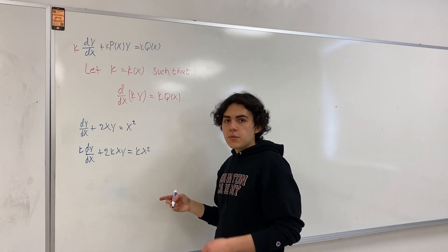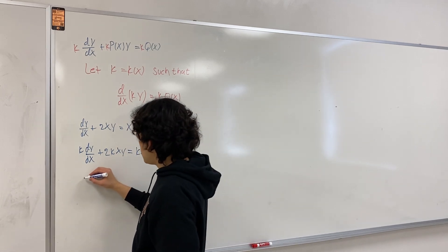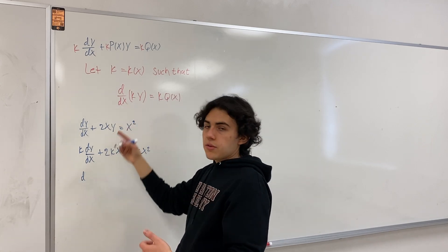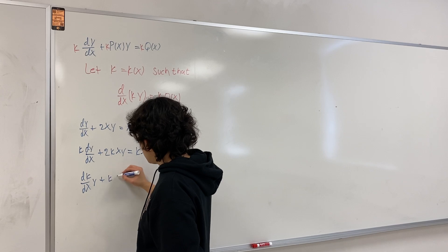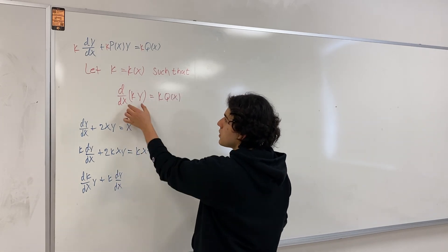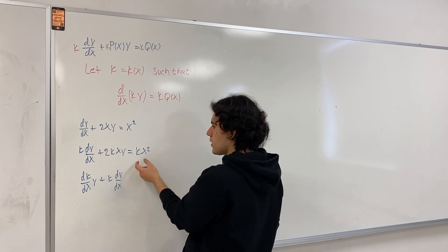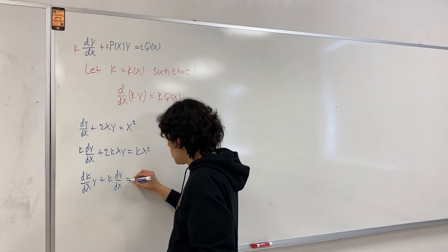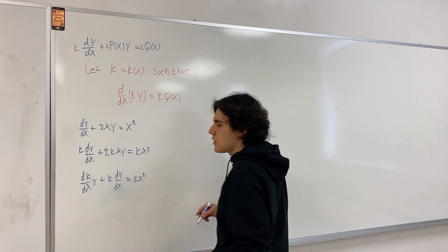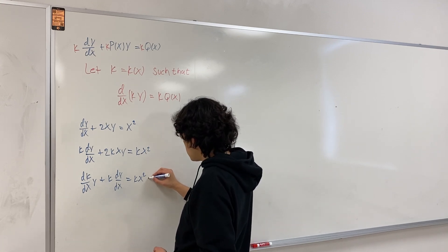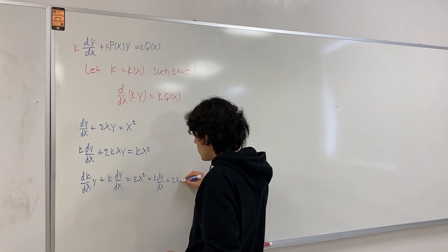Now we're going to differentiate this, because we want to let the left-hand side be equal to the derivative of k times y. So using the product rule, the derivative property gives us dk/dx times y plus k dy/dx, and this equals k times q of x. In this case, q of x equals x squared, so k times q of x equals k times x squared. And we want to match this with our multiplied equation, which has k dy/dx plus 2kx times y on the left.